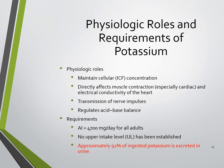Potassium's physiologic role is to maintain intracellular concentration. It directly affects muscle contraction, especially cardiac muscle, and the electrical conductivity of the heart. It facilitates transmission of nerve impulses and helps regulate acid-base balance. The average intake for adults is 4,700 milligrams per day. Leafy green vegetables are probably the best source of potassium. There is no tolerable upper intake level, and approximately 92% of ingested potassium is excreted through urine.